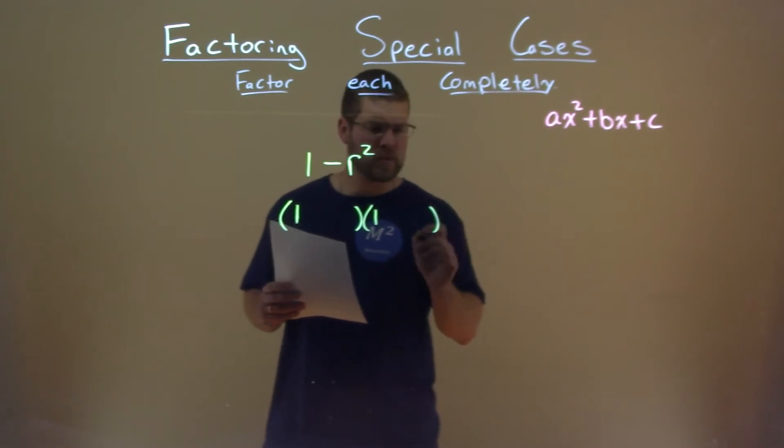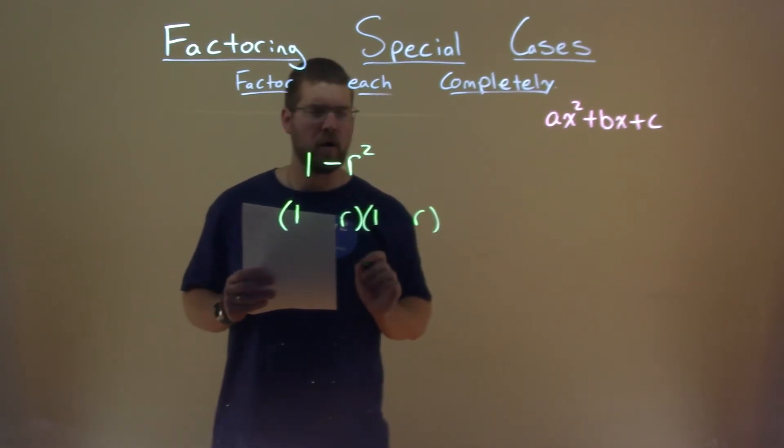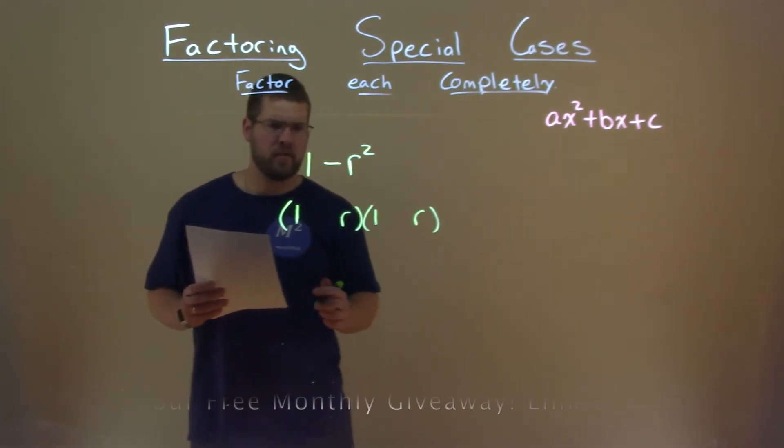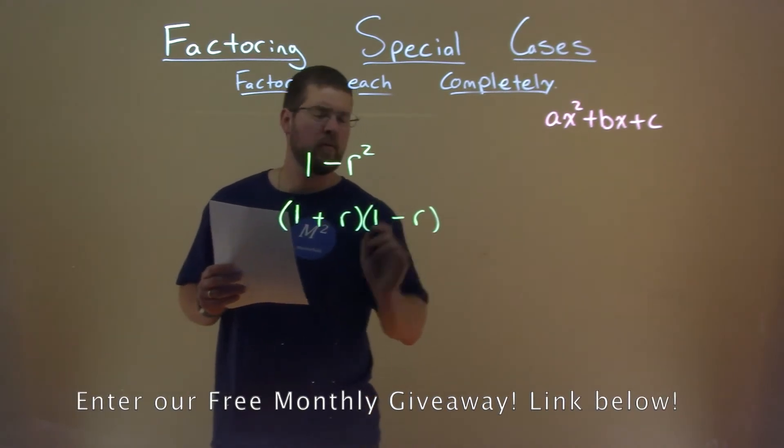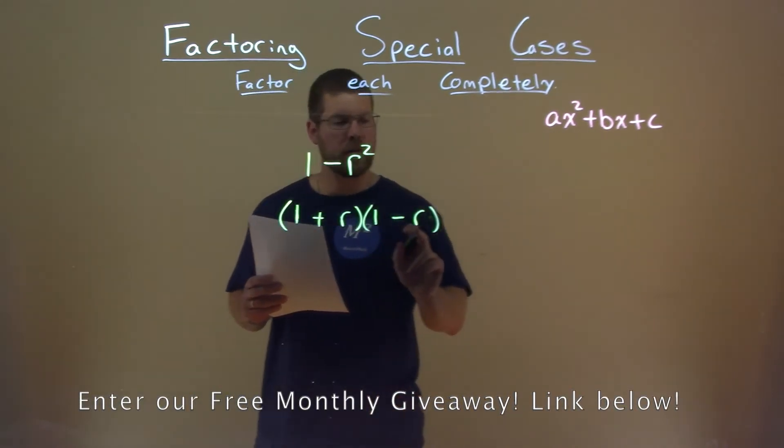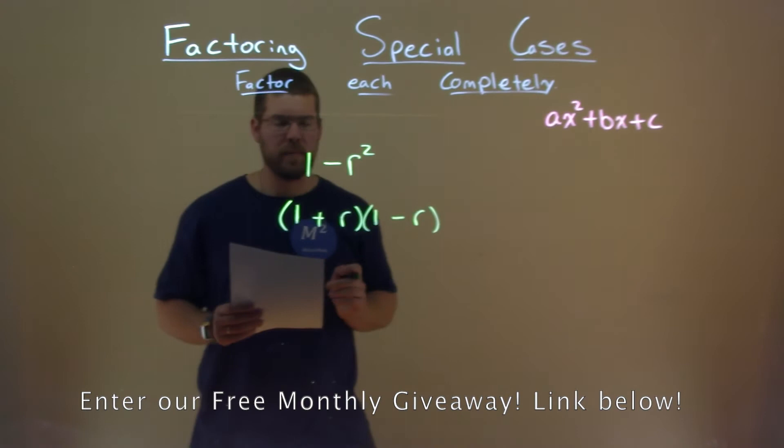R squared, well square root of R squared is R, we have an R and an R, but it's a minus R squared, so 1 is going to be positive, 1 negative. Positive R times negative R is negative R squared, perfect.